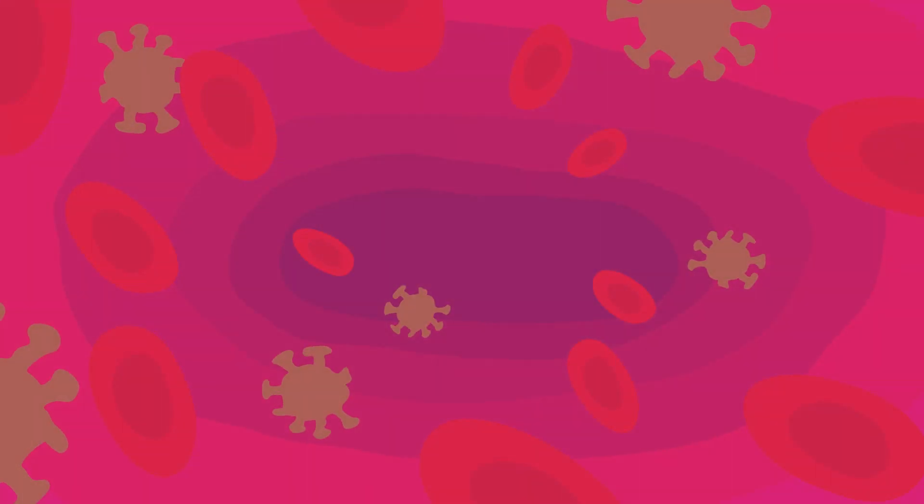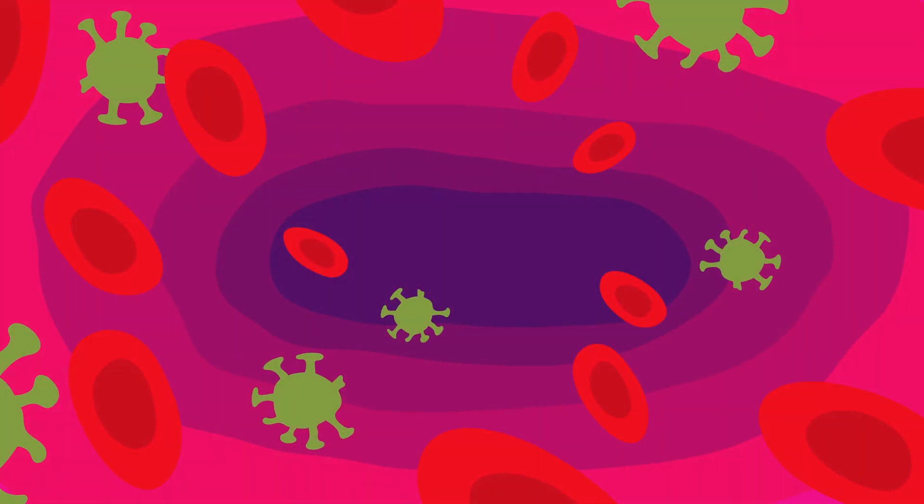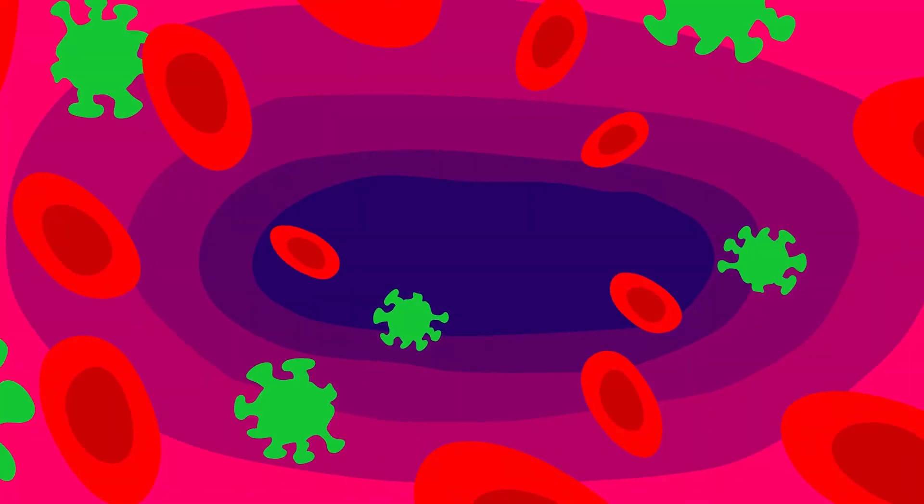Let's examine the heart for a moment. From a distance, it's red, and a little larger than an adult fist. But when we zoom in, we see an outline of muscle cells.